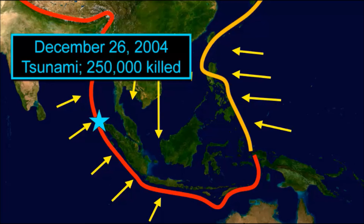Another natural hazard besides volcanoes and earthquakes — an outcome of convergent plate boundaries — is a tsunami. One happened in 2004 that killed 250,000 people, about as many as attend the Indy 500 every year. This natural disaster occurred just the day after Christmas, so many Europeans, Americans, and Australians were vacationing in Southeast Asia to escape the Northern Hemisphere winter. Many people were along coastlines on beaches when this huge wave surged onto the shoreline.